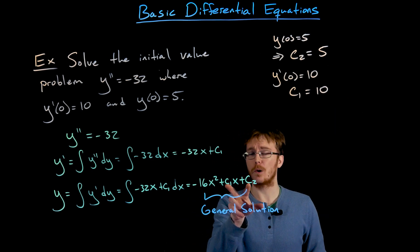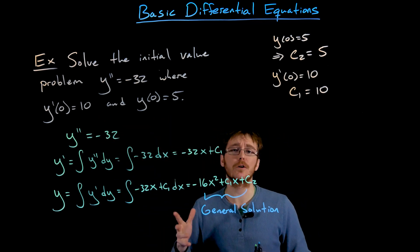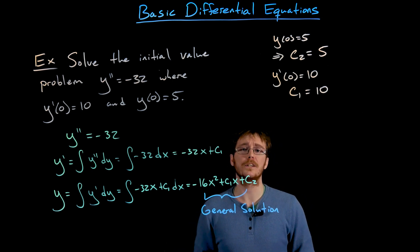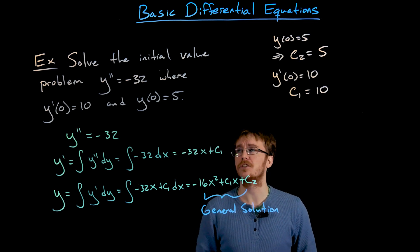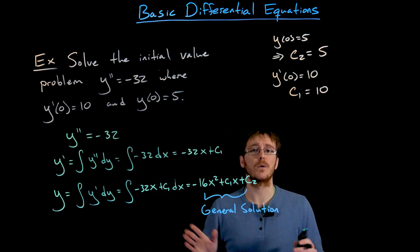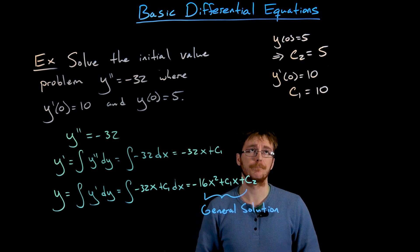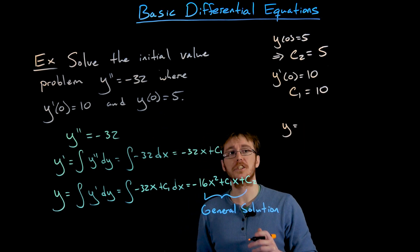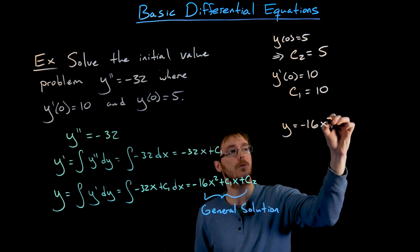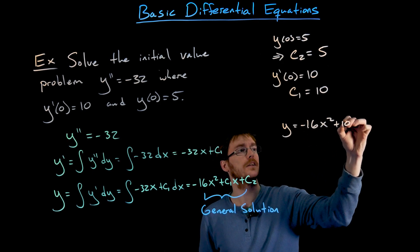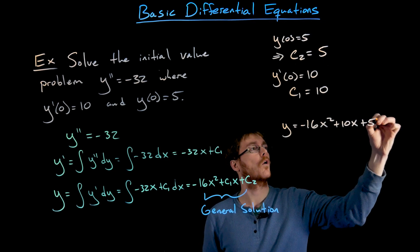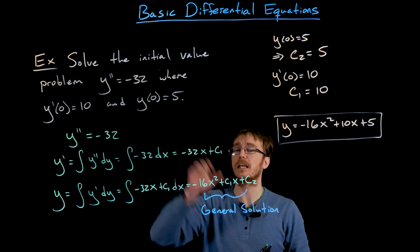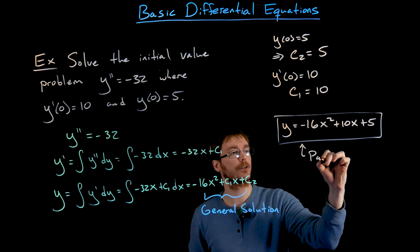In general, these constants c1 and c2 will not match up perfectly with the initial conditions of 5 and 10 — that was coincidence in this case. But we always find those constants using the initial conditions. So the solution to our differential equation satisfying these two initial conditions is negative 16x squared plus 10x plus 5, and we call this a particular solution.